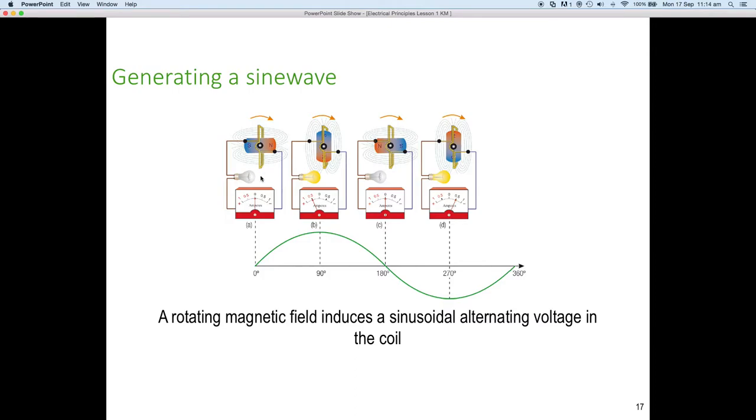So, there's no actual flux cutting the conductors. As you can see, the lamp is not illuminated because there's no current flowing. The ammeter is telling us there's no current flowing because there's no voltage or potential being generated. Therefore, we're not getting any current, and that represents the zero position.